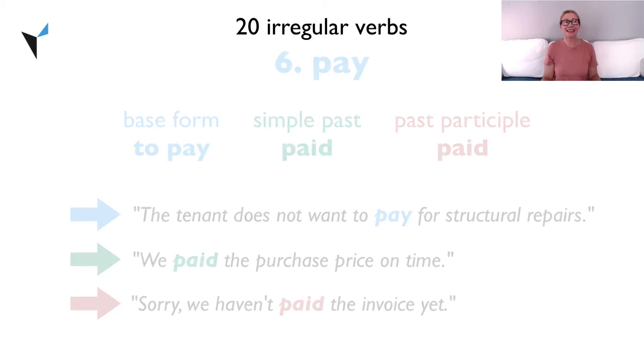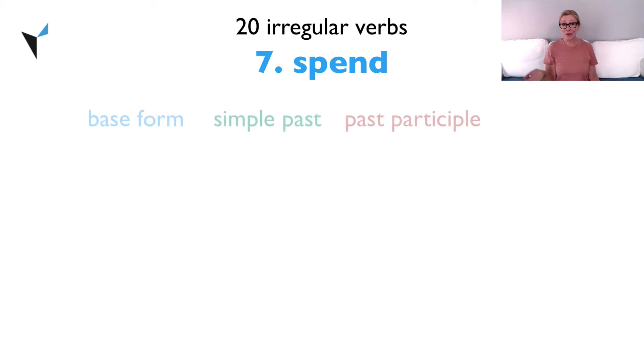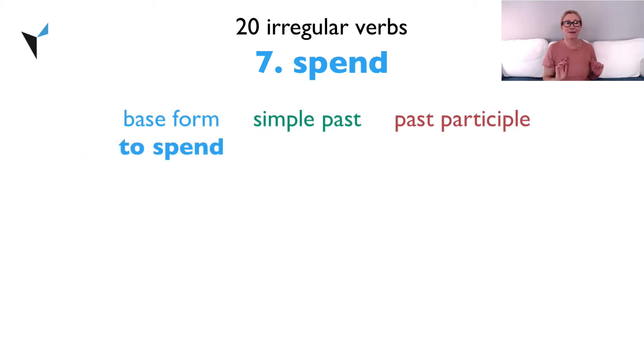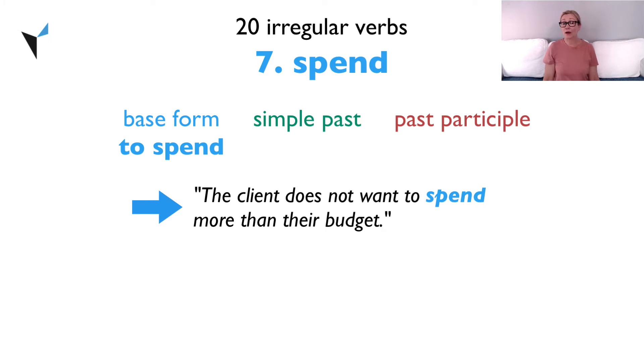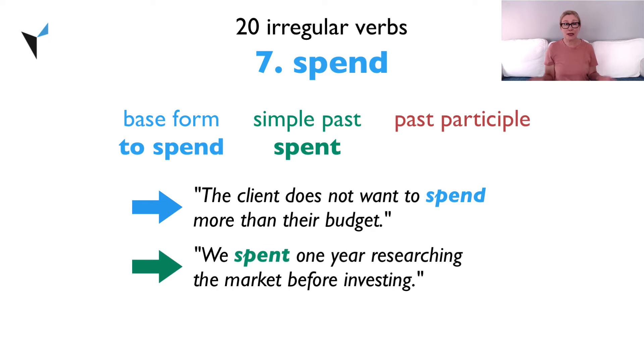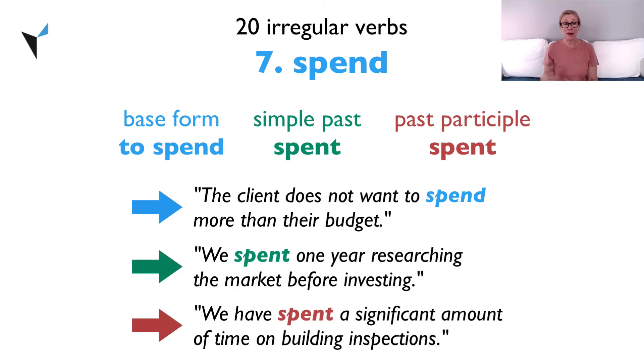Verb seven, spend. The base form is to spend. The client does not want to spend more than their budget. The simple past is spent. We spent one year researching the market before investing. And the past participle is also spent. We have spent a significant amount of time on building inspections.